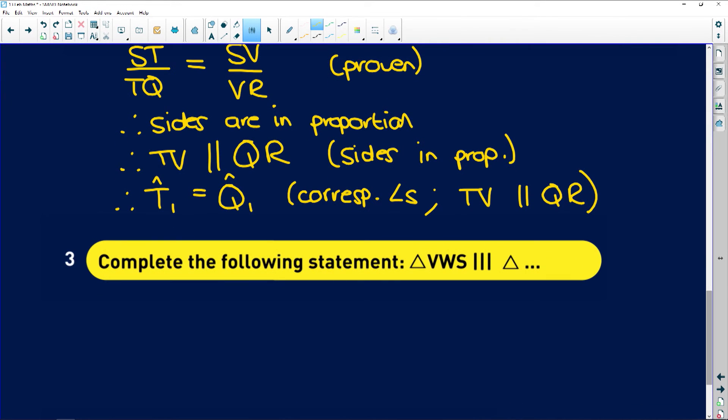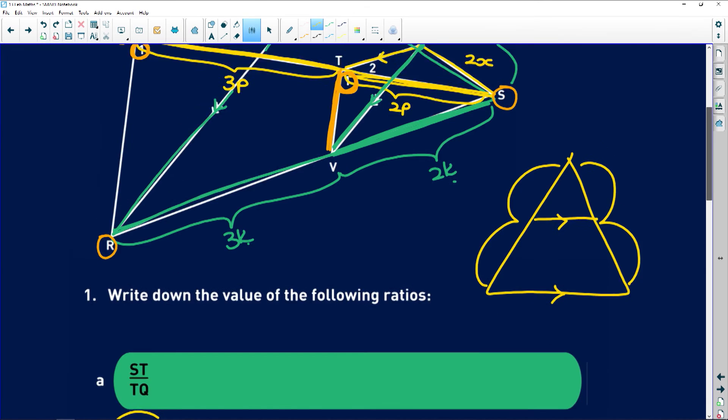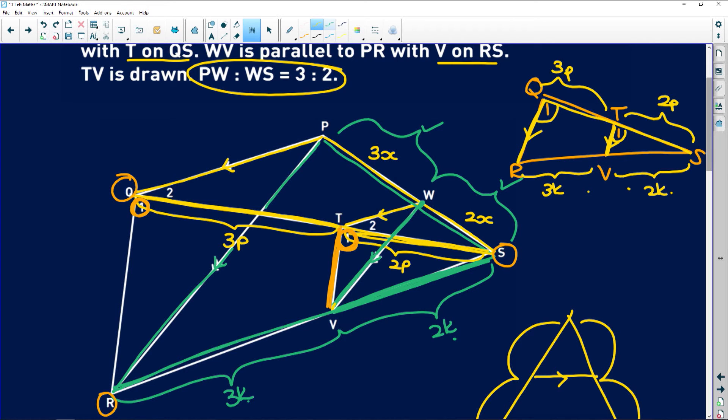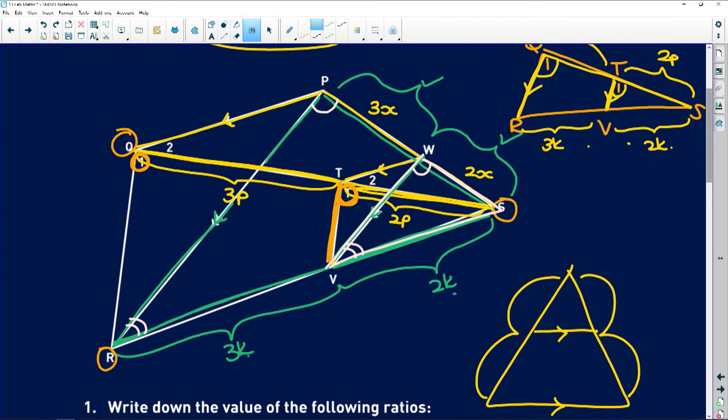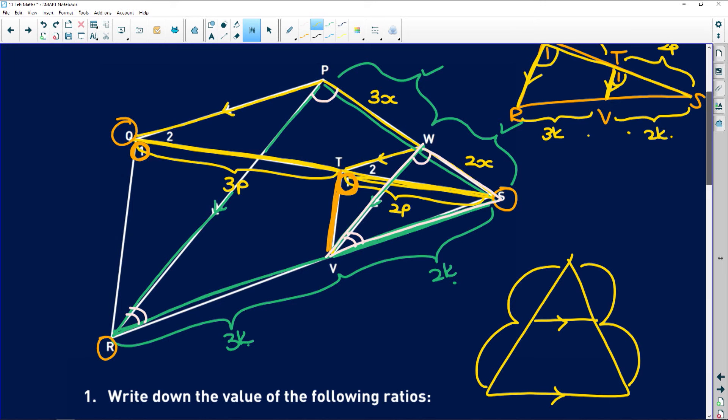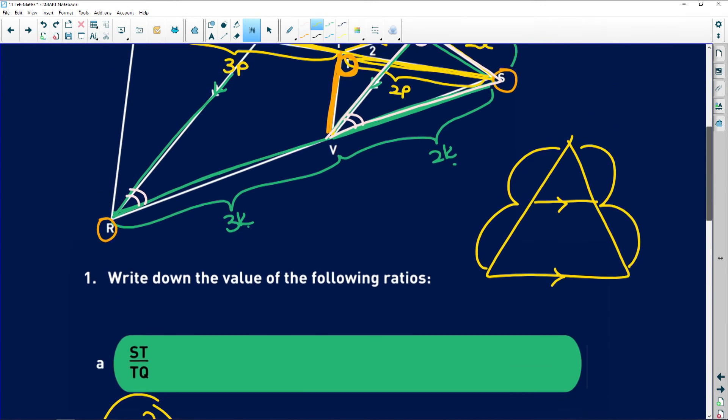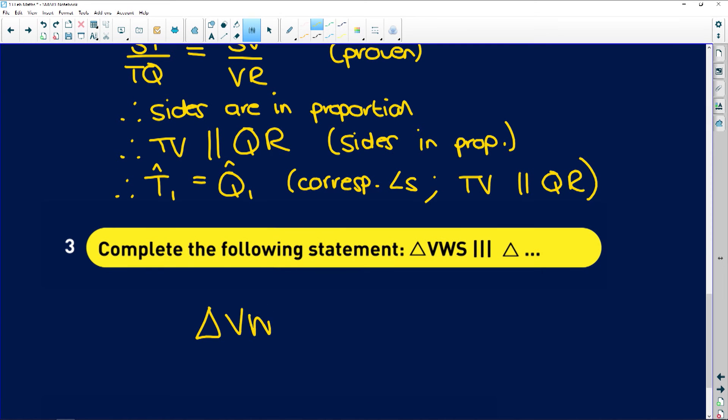Question 3 says complete the following statement. Triangle VWS is similar to what triangle? VWS. Let's try to get another color going. I'm going to go over it in white again. VWS is this little triangle here. So if you look we've got parallel lines. So corresponding angles over there and corresponding angles over here. So remember similar triangles have corresponding angles. Luckily for you don't have to prove them. You don't have to list the angles. You can just say that VWS is similar to triangle RPS. And you could say that they are equiangular. But it doesn't say prove. It just says complete that statement. So if you just say this that is 100% fine.